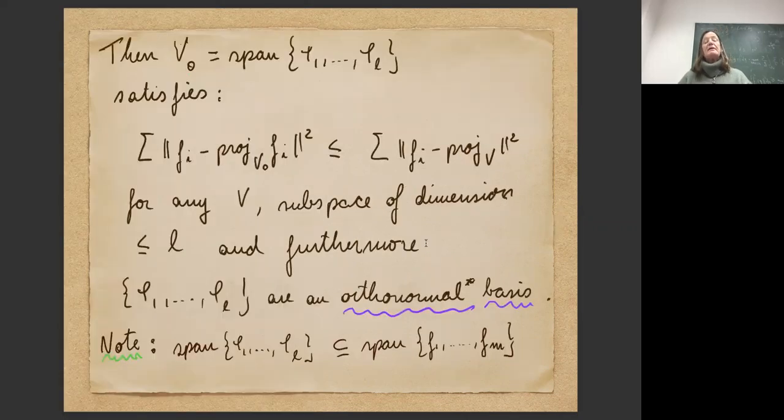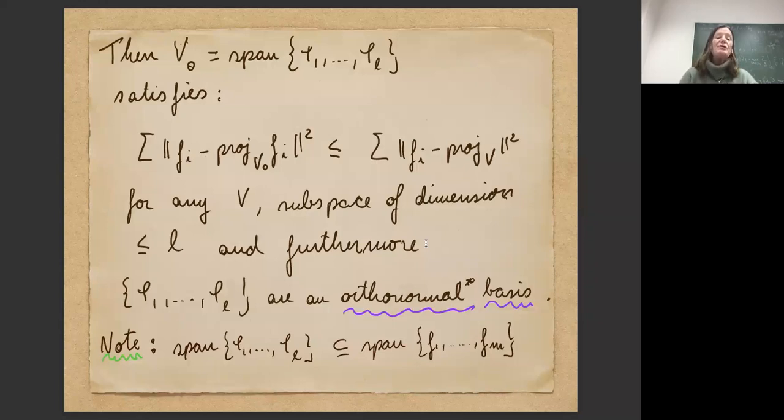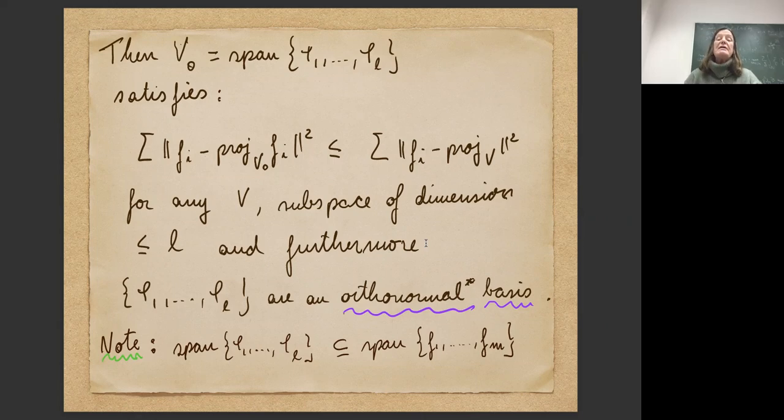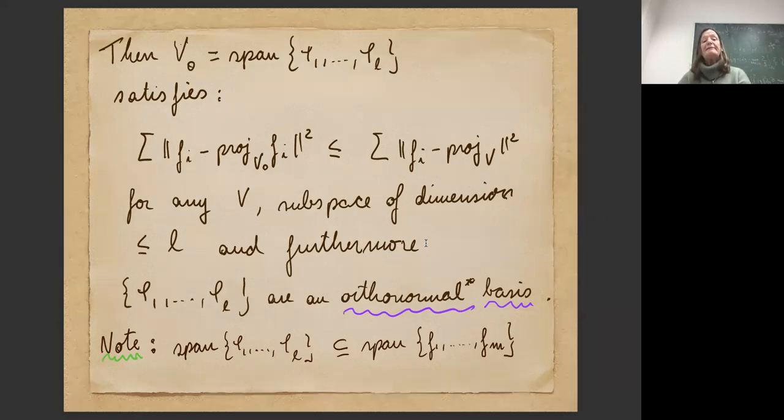So this theorem is the theorem of Eckhart-Young. The vectors phi_1 to phi_L that I define this way, picking the L largest eigenvalues, these vectors span the best subspace of dimension L that best approximates my data f. And as you see, the span of these vectors is included in the span of my vectors f. So I have L vectors which span an L dimensional subspace. I have M data and the vectors phi 1 to phi L are linear combinations of the data. This is, I'll just say it because it will be important later.